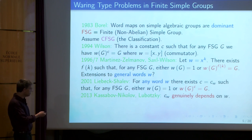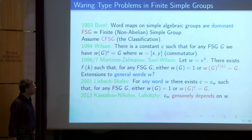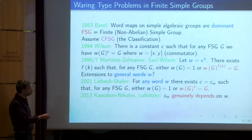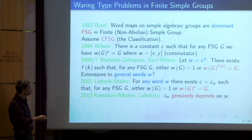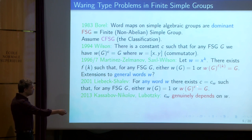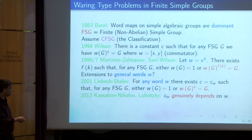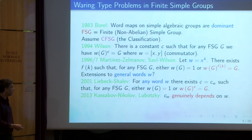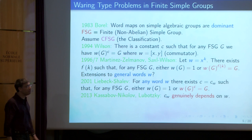We are interested in extension to general words. With Liebeck, we proved that for any word w there exists a constant depending on the word such that for any finite simple group, either wG is 1 or wG to this constant is the whole of G. It's exactly like the results of Wilson and Martina Zelmanov and Saxl–Wilson, but not just for powers and commutators, but for general words. You can complain about the constant Cw — maybe it doesn't depend on the word. Only quite recently there were results proving that it does depend.